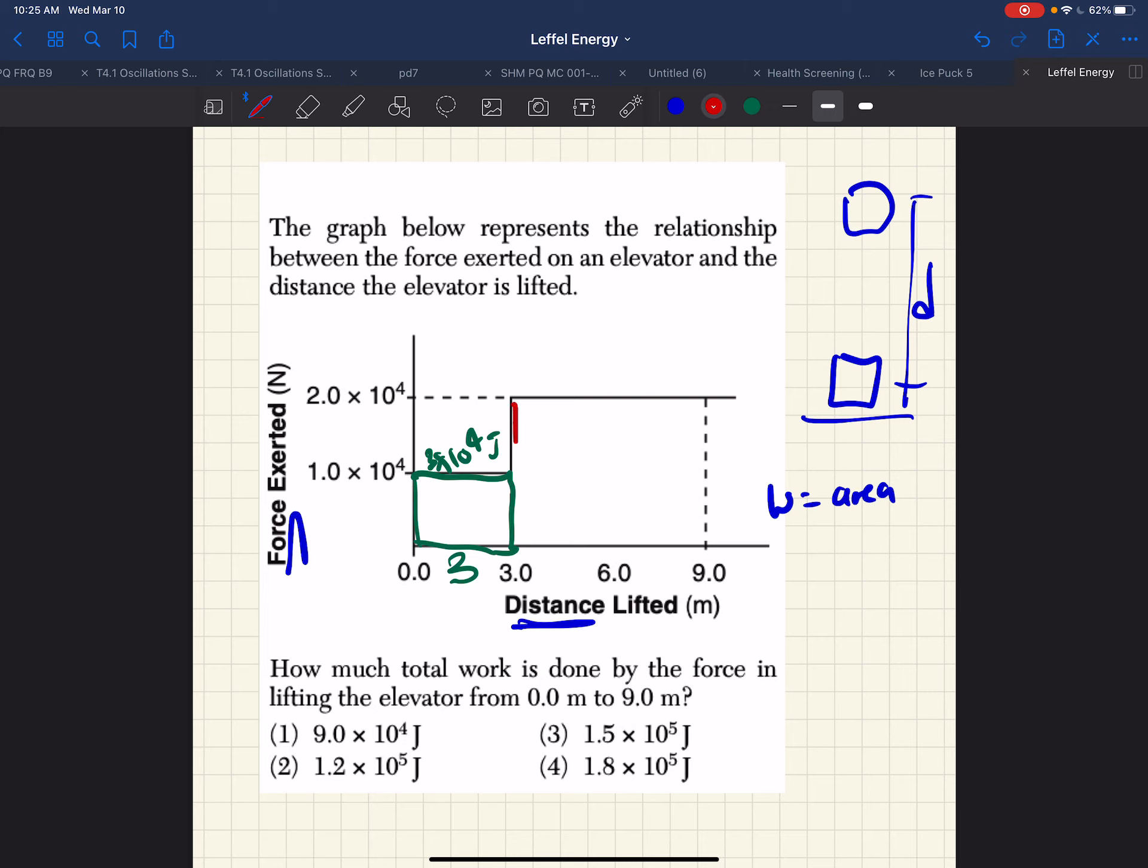And our second is this, which has a side length of 6, then a height of 2, times 10 to the 4th, which is 12 times 10 to the 4th.